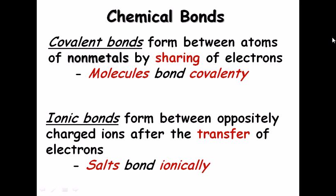First, what are chemical bonds? Chemical bonds are of different types. One is the covalent interaction — covalent bonds formed between atoms by sharing of electrons between themselves. On the other hand, the ionic bond forms between oppositely charged ions — one has to have a positive charge and another has to have a negative charge — then only they can interact and attach with themselves.